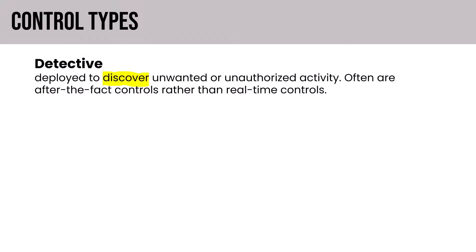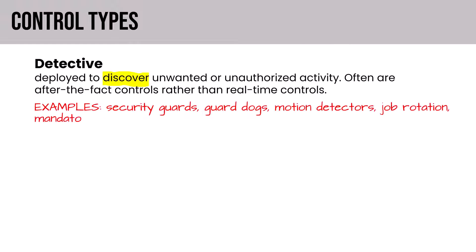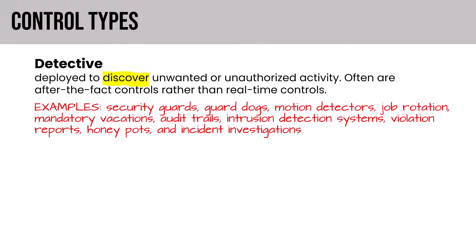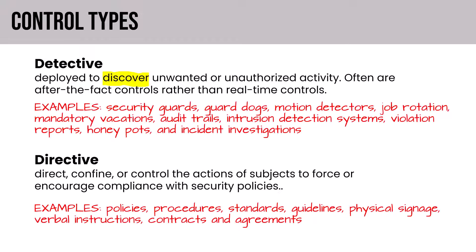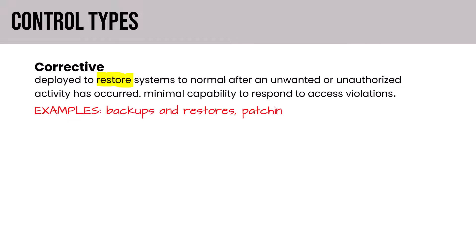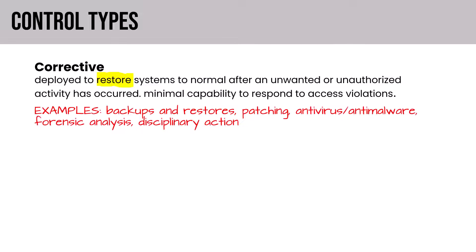Detective controls, deployed to discover, include security guards, dogs, motion detectors, job rotation, mandatory vacation, audit trails, and intrusion detection — all allowing us to detect or discover unwanted activity. Directive controls, which direct, confine, or control actions, include policies and procedures, standards, guidelines, physical signage, verbal instructions, and contracts and agreements — all intended to direct or encourage specific behavior. Corrective controls, which restore systems to normal, include backups and restores, patching, antivirus or anti-malware, forensic analysis, and disciplinary action — all playing a role in returning systems and the environment back to normal.